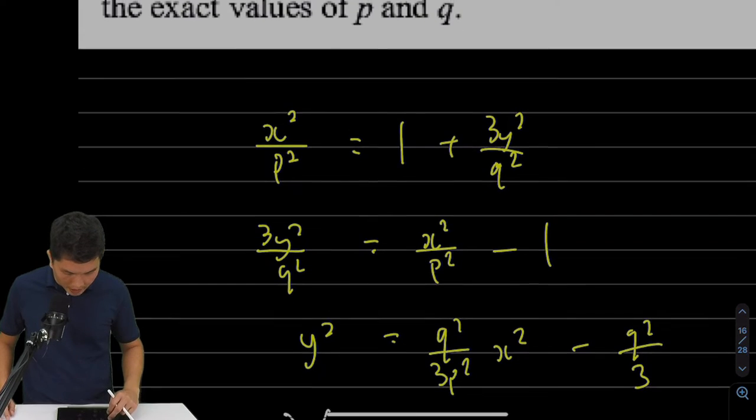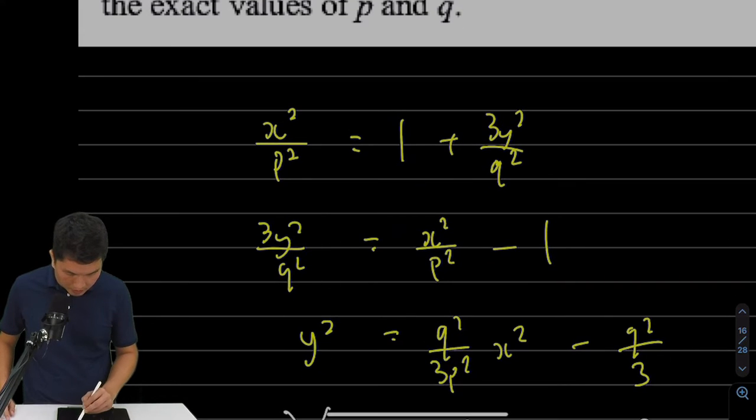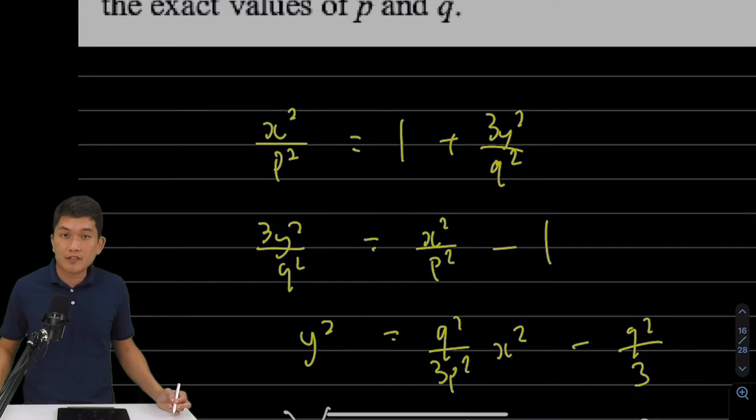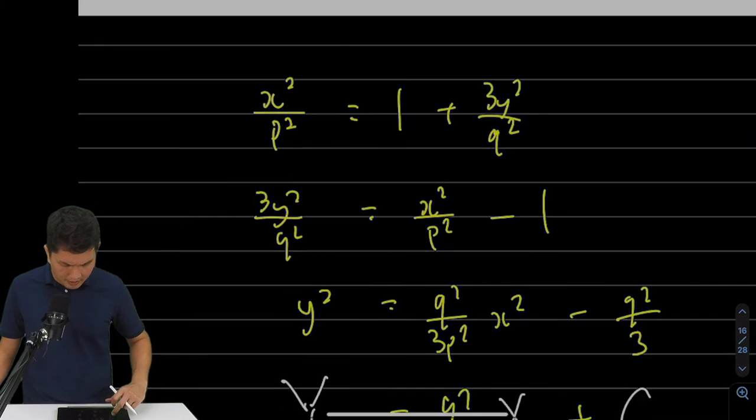Next, if I want y-square to be subject of the formula, maybe I need to multiply by q-square over three. Multiplying by q-square over three will give me y-square, multiply by q-square over three, q-square over three. And if you look carefully, we have actually arrived at a straight line form.